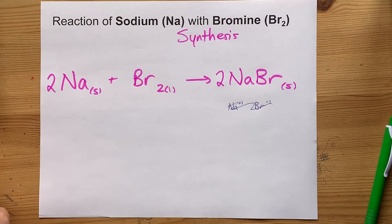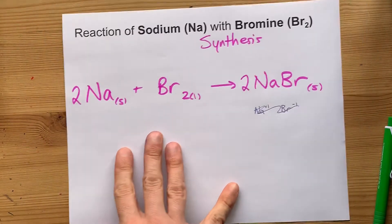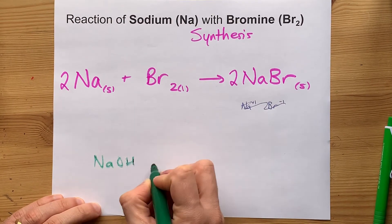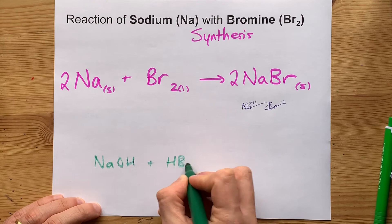It turns out this is not how they actually make sodium bromide in industry. In industry, they take NaOH and they combine it with HBr.